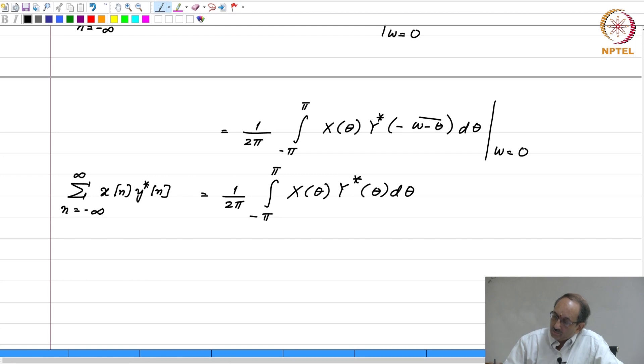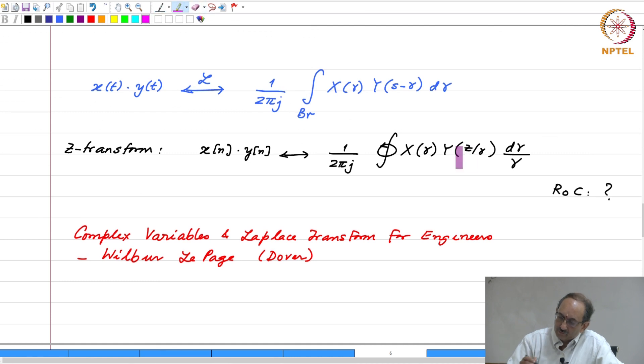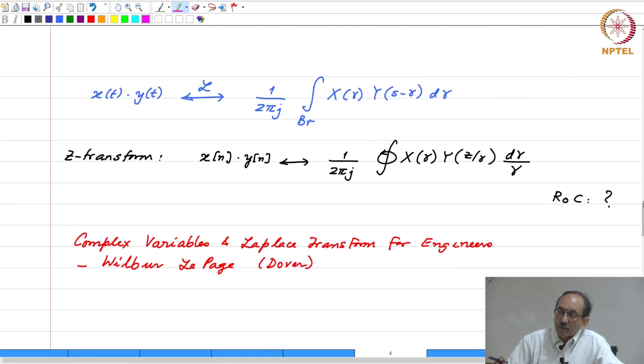And what is the corresponding statement for the Z transform case? That can be actually easily seen from this result. So if you now evaluate this at what point in Z would this correspond to sum up over all n of what is on the left hand side? Very good. It is Z equal to 1. If you evaluate the transform at Z equal to 1, you are summing up the sequence over all n.